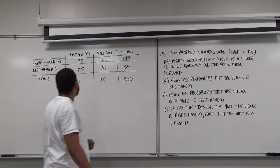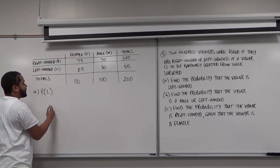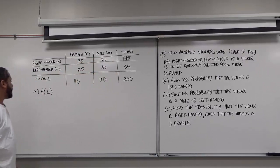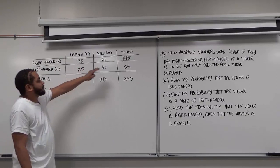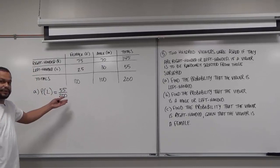Let's start with problem A: find the probability that the viewer is left-handed. We're looking for the probability of L. Left-handed people are denoted by L, right-handed by R, females by F, and males by M. To find the probability that the viewer is left-handed, we look at the total left-handed people and put 55 over 200. This represents the number of left-handed people over the total number of people in the survey.